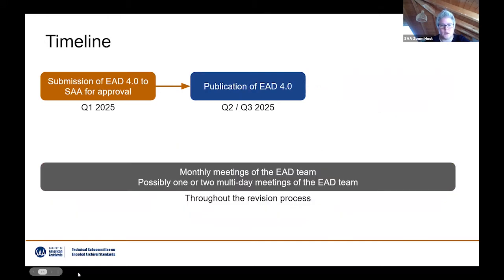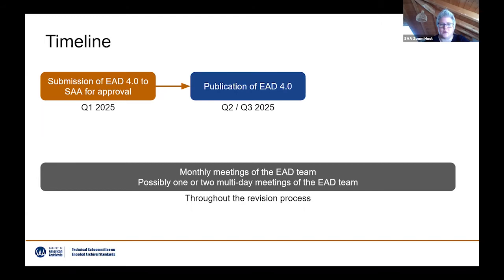All of that ideally would lead us to publishing a draft for EAD 4.0 and having another call for comments by the end of 2023. There will be more community engagement throughout 2024, leading to a final version of EAD 4.0 by the end of 2024 or early 2025. After that are the administrative steps: submitting our suggestion to the Standards Committee and then to SAA Council for approval. Hopefully, we will publish the new version of EAD in the second or third quarter of 2025. The EAD team will meet monthly to discuss received feedback.